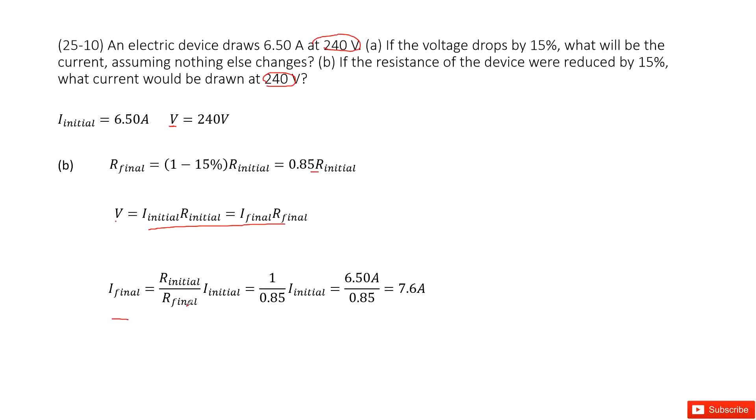First of all, we can find the ratio of the initial resistance over final resistance. This is 1 over 0.85. Then times initial current, we get the answer there. Thank you.